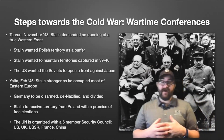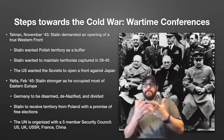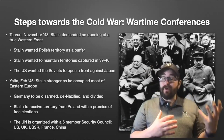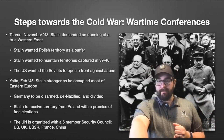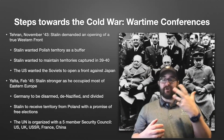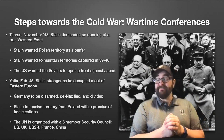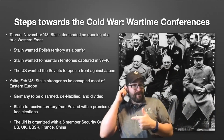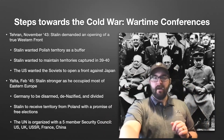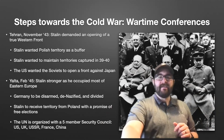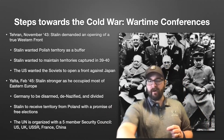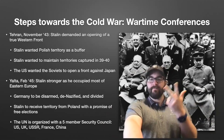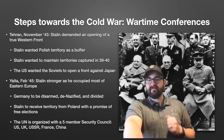In February of 1945, Joseph Stalin meets his allies at Yalta in the Soviet Union. He's in a stronger position as he's occupying much of Eastern Europe. It's agreed at Yalta that Germany is going to be disarmed, denazified, and divided. Stalin will receive territory from Poland with a promise of free elections — this is the shifting border of Poland. Also at Yalta, the United Nations is organized with a five-member Security Council: the U.S., the United Kingdom, the Soviet Union, France, and China.